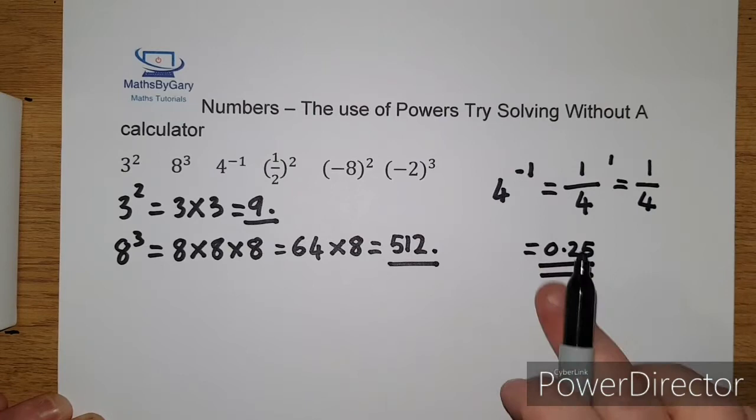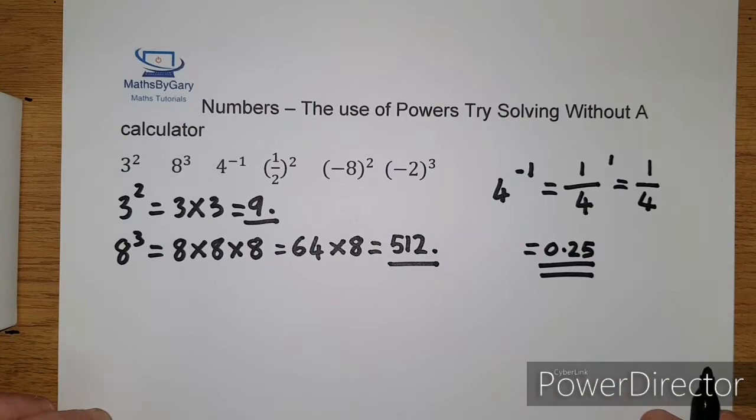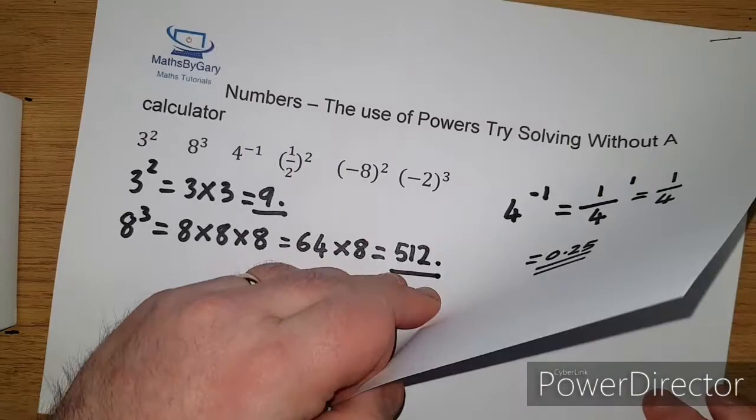So what we're doing is 1 divided by the number and then change the power from a negative to a positive. Okay, so we'll move on to some more examples.